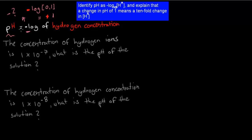Remember, pH is the concentration of hydrogen ions expressed as a logarithm. And a change of 1 in pH — for example going from pH 1 to pH 2 — represents a tenfold increase in concentration. We'll go over that again in a moment.